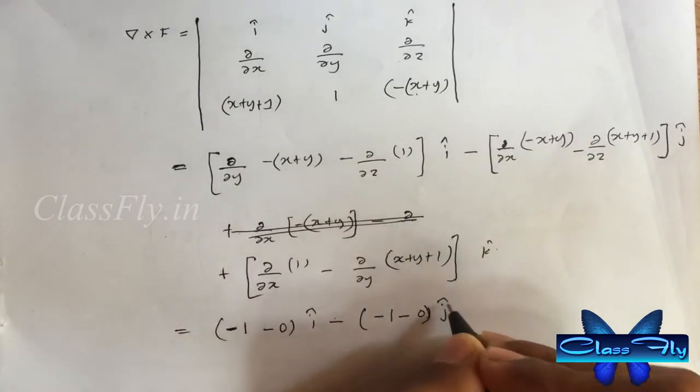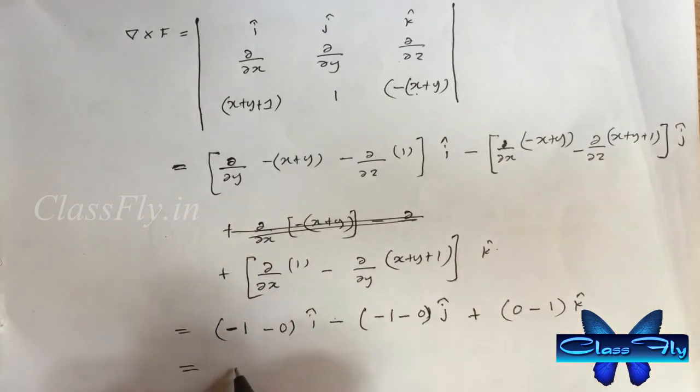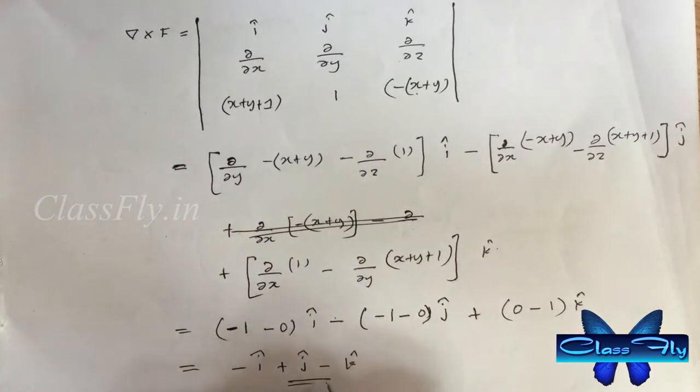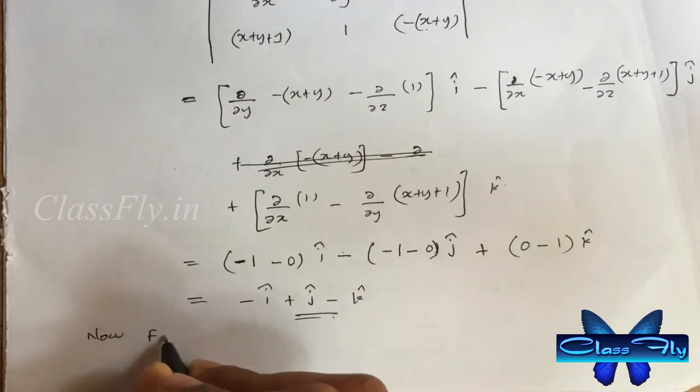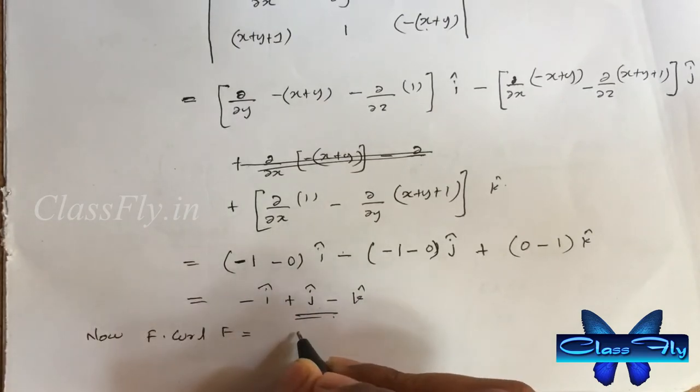After solving the determinant, we get curl f equals minus i plus j minus k. Now take the dot product, f dot curl f.